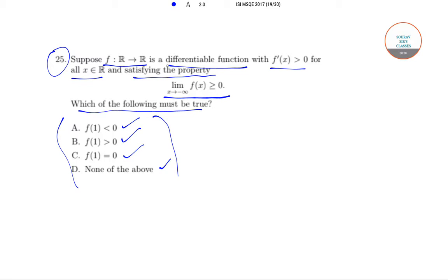So we have been given that f(x) is a differentiable function and f'(x) is greater than 0. So this implies that it is an increasing function and which satisfies the property limit of f(x) is greater than or equal to 0 for x tends to minus infinity.